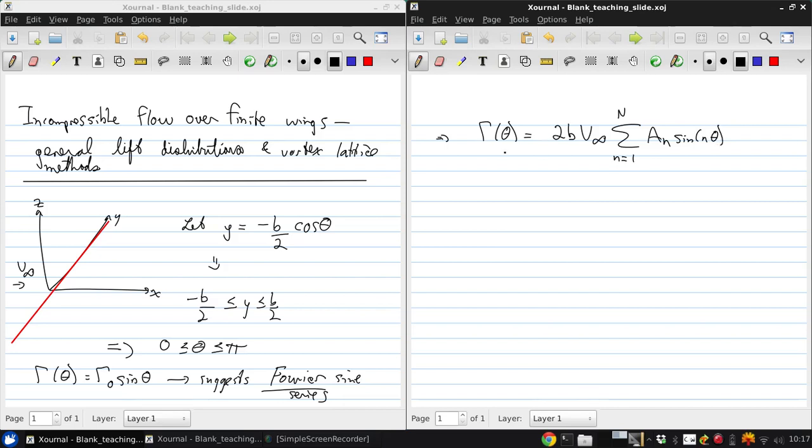And we can choose this n for any desired level of accuracy. Obviously, n equals 1 is approximating things using the elliptical lift distribution. And going above that, it starts giving us an approximation for non-elliptical distributions.